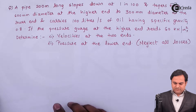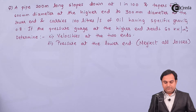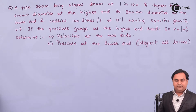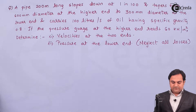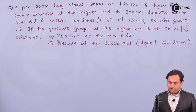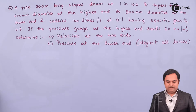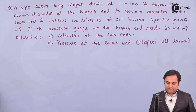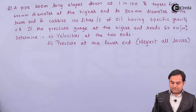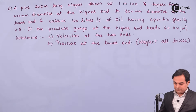Hello friends, in this video we'll see a problem on Bernoulli's equation. A pipe 200 meters long slopes down at 1 in 100 and tapers from 600 mm diameter at the higher end to 300 mm diameter at the lower end and carries 100 liters per second of oil having specific gravity 0.8. If the pressure gauge at the higher end reads 60 kN per meter square, determine: number one, velocities at the two ends; number two, pressure at the lower end, neglecting all losses.